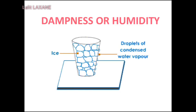Take ice cubes in a glass up to three-fourths of its height. Now observe what happens. How did the water droplets appear on the outside of the glass? Due to the ice cubes in the glass, the surrounding air cools down. As the water vapor in this air cools down, it condenses and gets transformed into water. It is this water that collects on the outer surface of the glass. The level of humidity is different in different places. Similarly, the humidity levels also change from time to time during a single day.